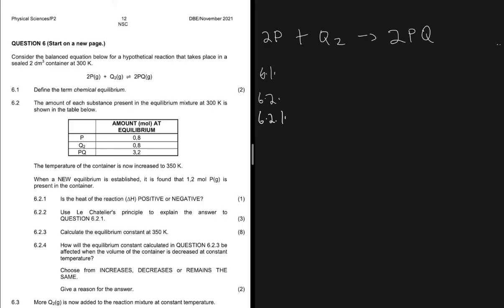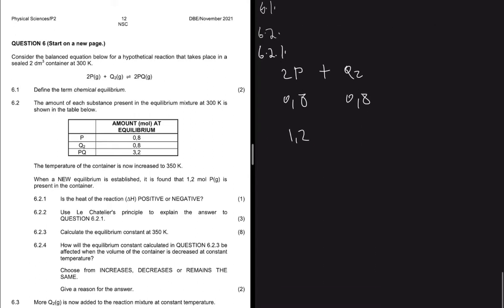At our initial equilibrium at 300 K, the amounts of P and Q are 0.8 and 0.8 moles. At 350 K, when temperature is increased, we have more P — from 0.8 to 1.2 moles — which tells us the reverse reaction was favored. If you increase the temperature, the endothermic reaction is favored, and that's the reverse reaction. So the enthalpy of the forward reaction is negative.